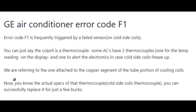Error code F1 is also common and occurs when a sensor has failed — specifically the sensor on the cold side coil. If the cold side coil sensor fails, you will see error code F1. You may need to check and replace that sensor. There is also a possibility that the thermocouple is bad — some AC units have two thermocouples, and one or both could be damaged. So change the cold side coil sensor, and if that doesn't help, change the thermocouple — both of them if necessary.